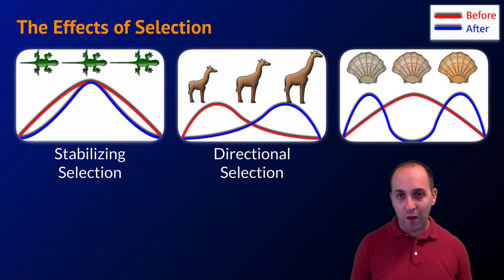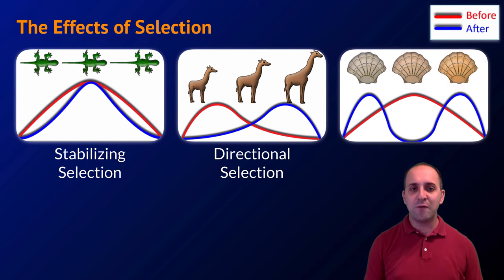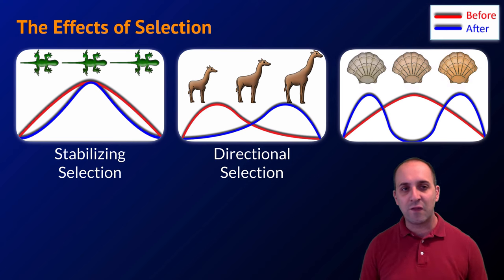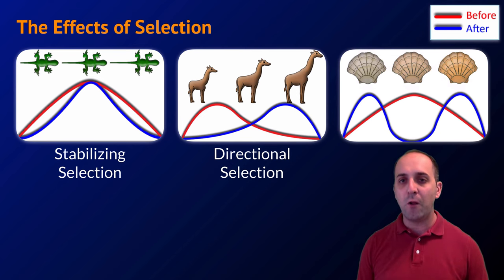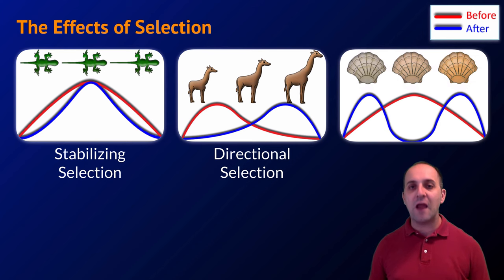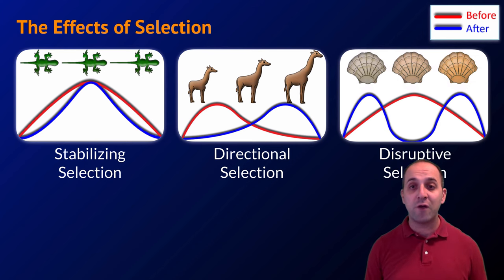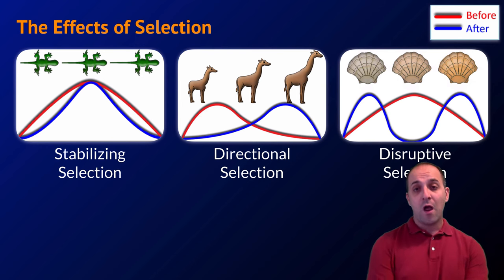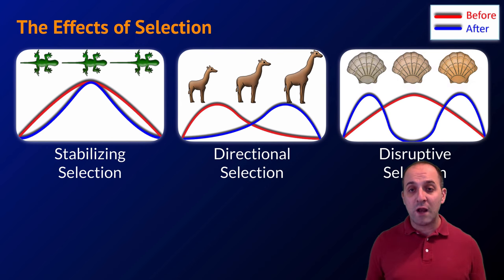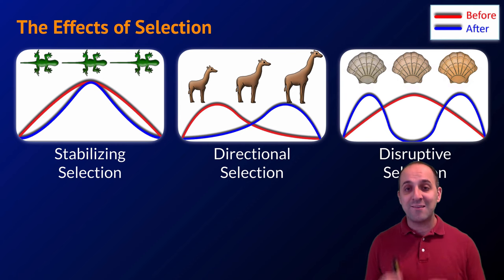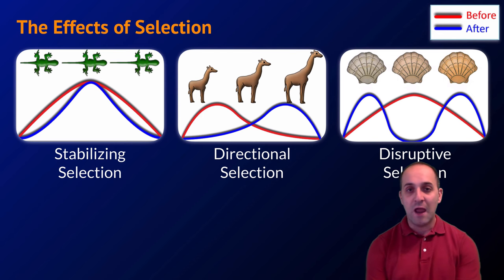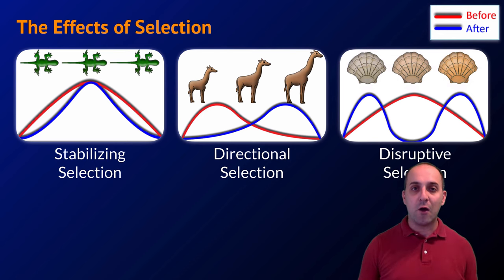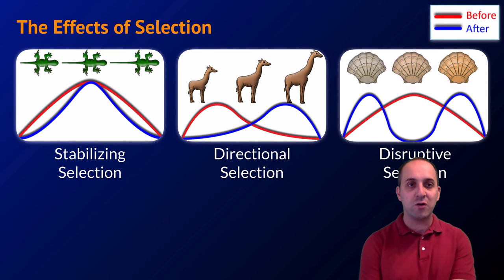The third example shows clams with different colored shells. Before selection it was similar to the lizard distribution — not many very light or very dark shells, quite a few in the middle. After selection, the middle has been selected against and we see selection for very light and very dark shells. This is called disruptive selection — eliminating the intermediate characteristic and selecting for either extreme.